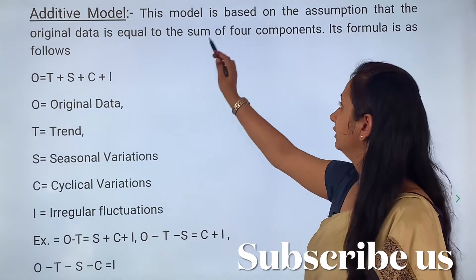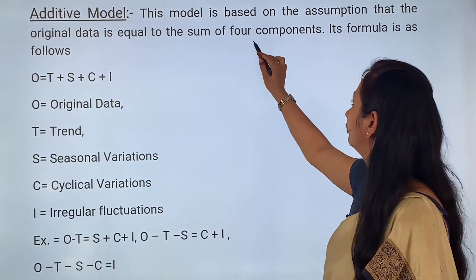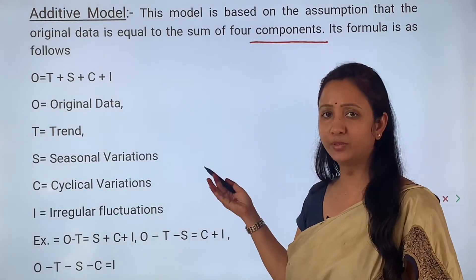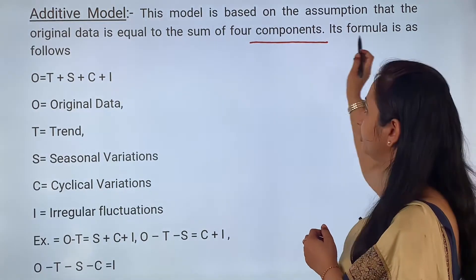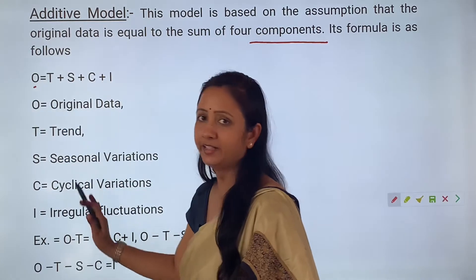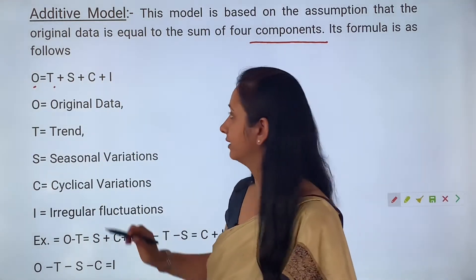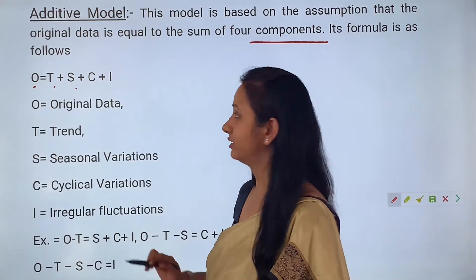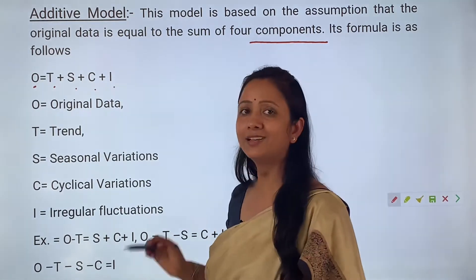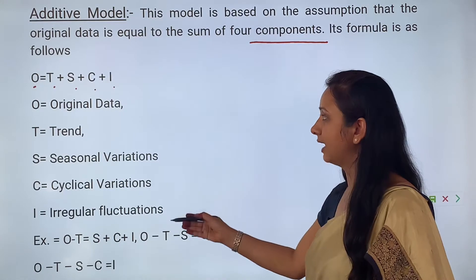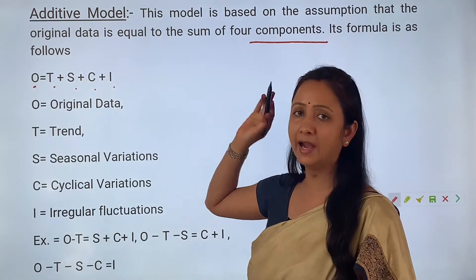Additive model: this model is based on the assumption that the original data is equal to the sum of four components — T, S, C, and I. Its formula is as follows: O (original data) equals T (secular trend) plus S (seasonal variations or fluctuations) plus C (cyclical fluctuations) plus I (irregular fluctuations). All these components are added together — that is your additive model.